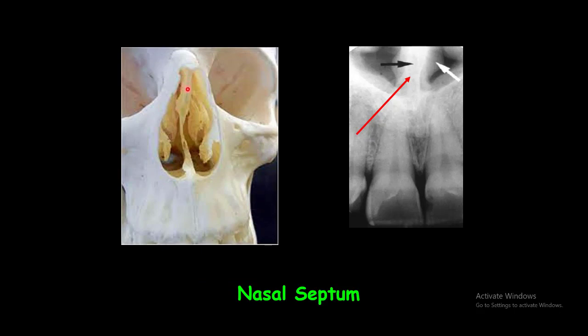The nasal septum is seen in the midline. In the periapical radiograph of the maxillary incisors, the nasal septum is radiopaque because of its bony composition. The shadow of the septum may appear wider because of the superimposition of the nasal cartilage.